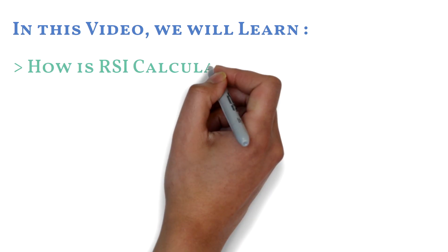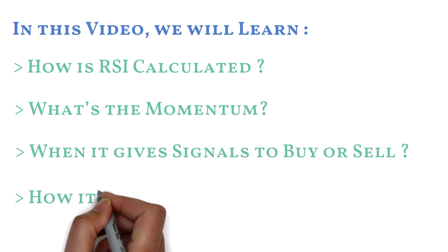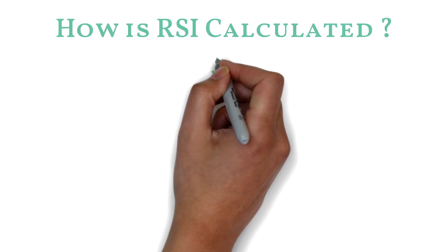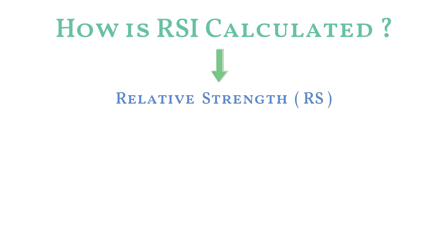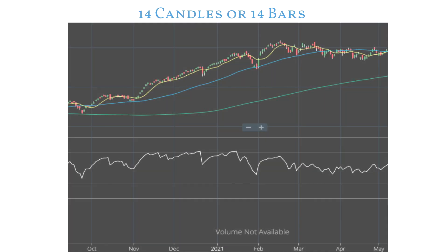In this video, we will learn how RSI is calculated and what the momentum signals are for potential buys or sells. To calculate RSI, let's first calculate RS — that is, relative strength. Firstly, let's identify the period for which you want to calculate RSI. As default, 14 periods is used in most software. Here, the period could be one month, one week, one day, 15 minutes, or as small as one minute.